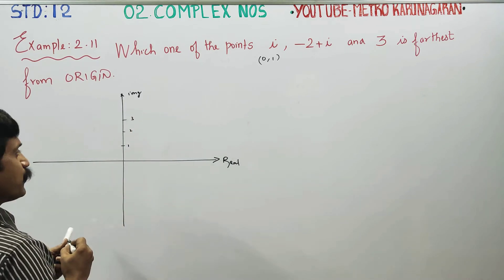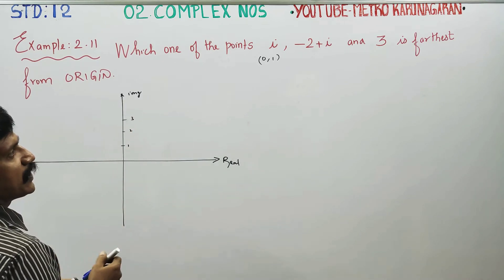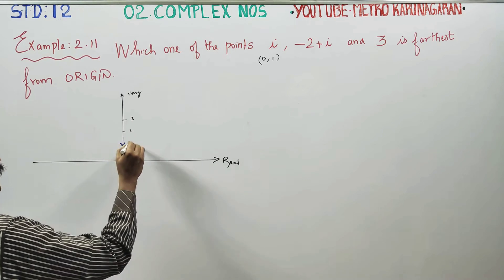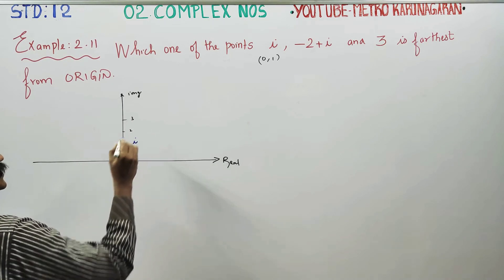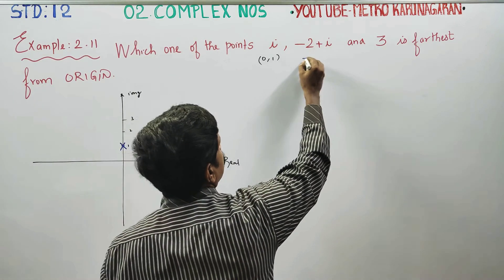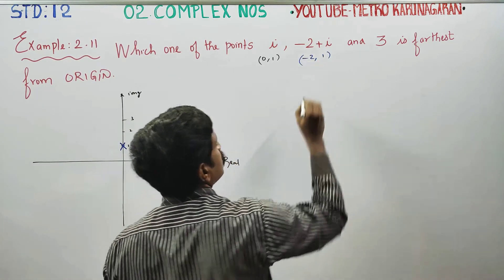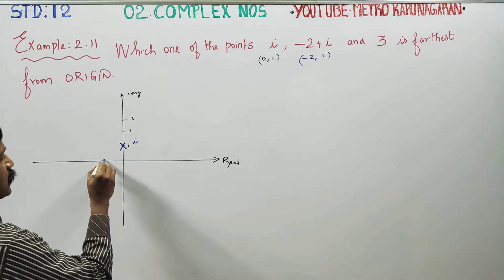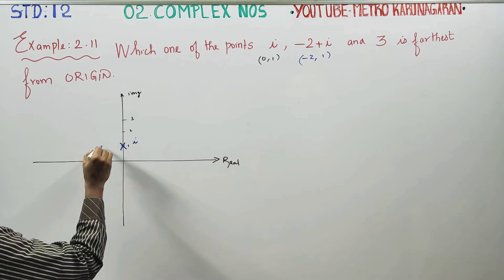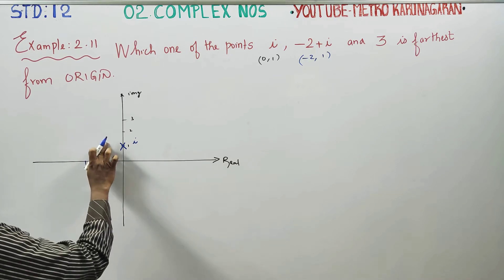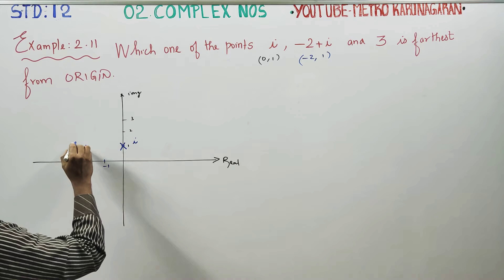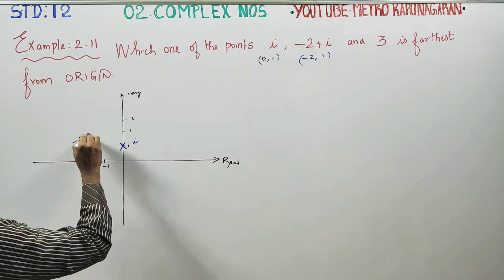You can see the first point, which is i, plotted at (0, 1). The second point is minus 2 plus i, which is the coordinate (minus 2, 1). So minus 2 plus i is plotted at (minus 2, 1).